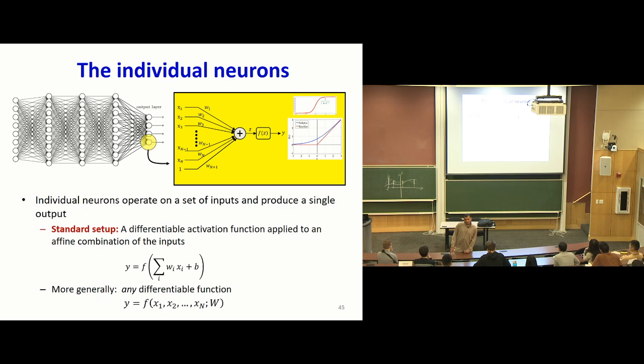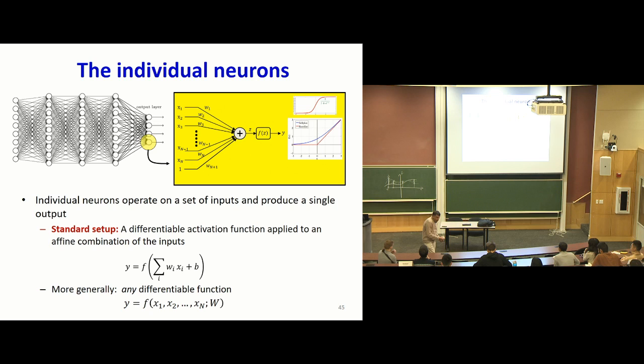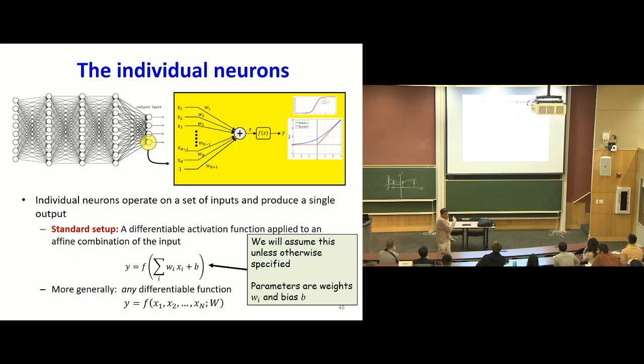More generally, you can think of a neuron as any differentiable function of the inputs. Why differentiable? You want to be able to wiggle the parameters a little bit and see how the output changes. If you cannot do that, you can't use gradient descent, because gradient descent is all about saying: if I modify this parameter a little bit, is the error decreasing or increasing? You're modifying the parameters in the direction in which the error decreases.